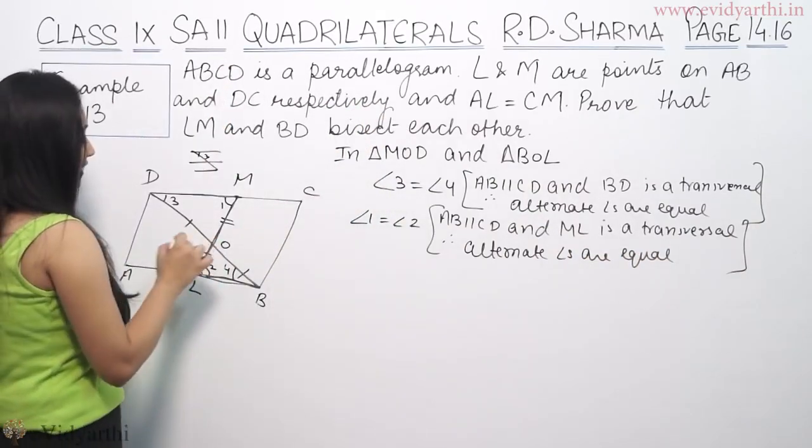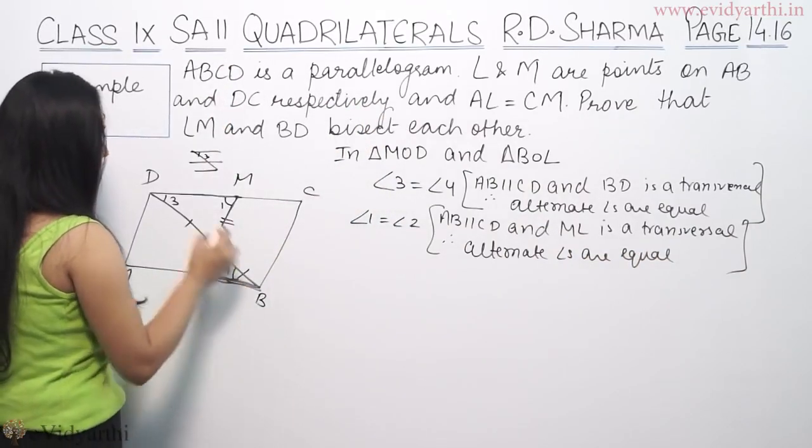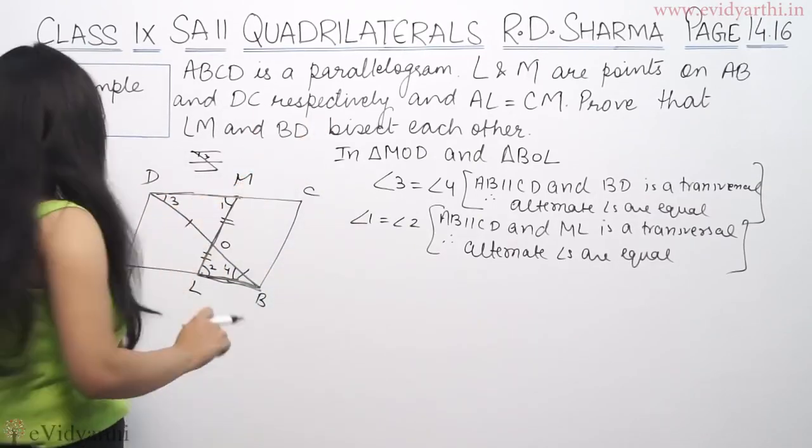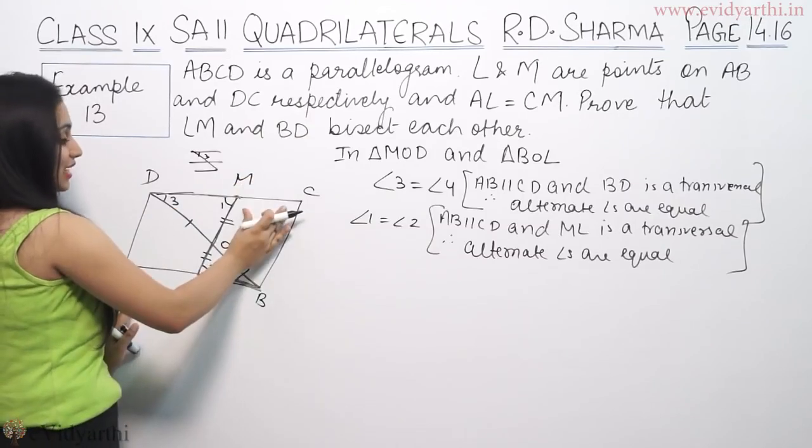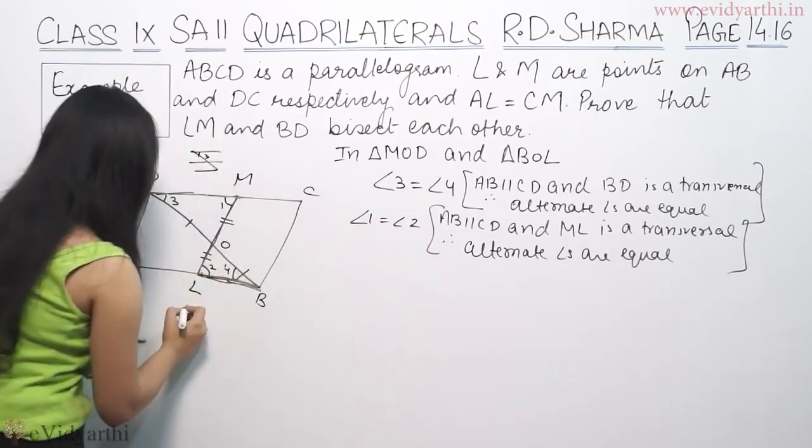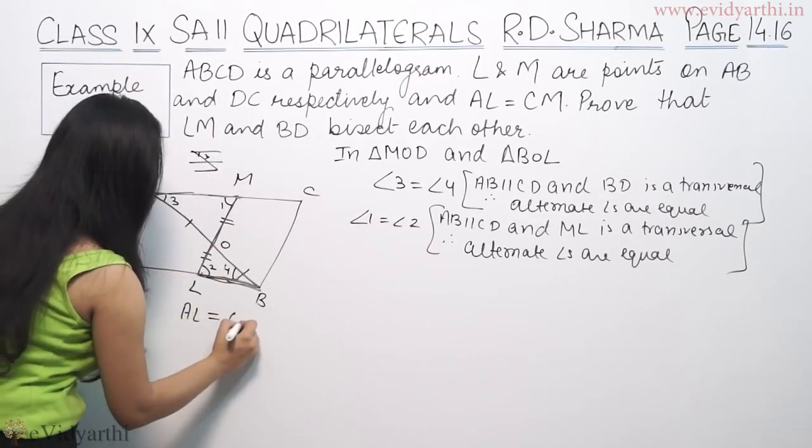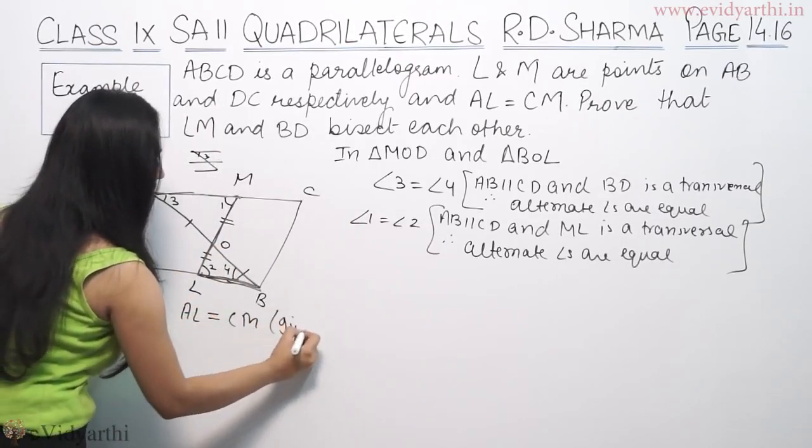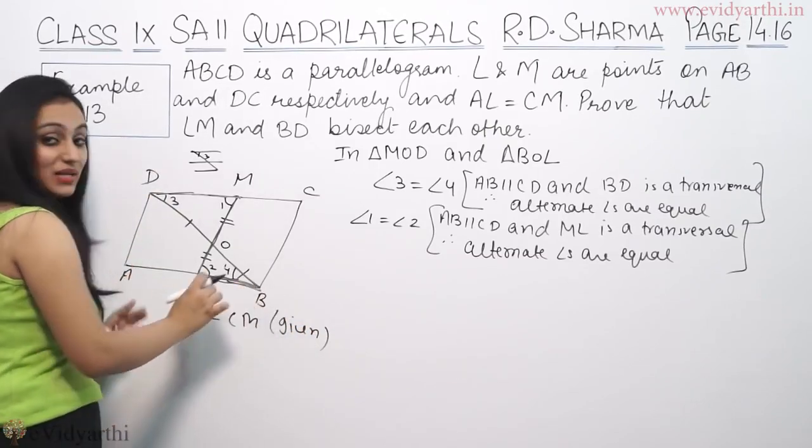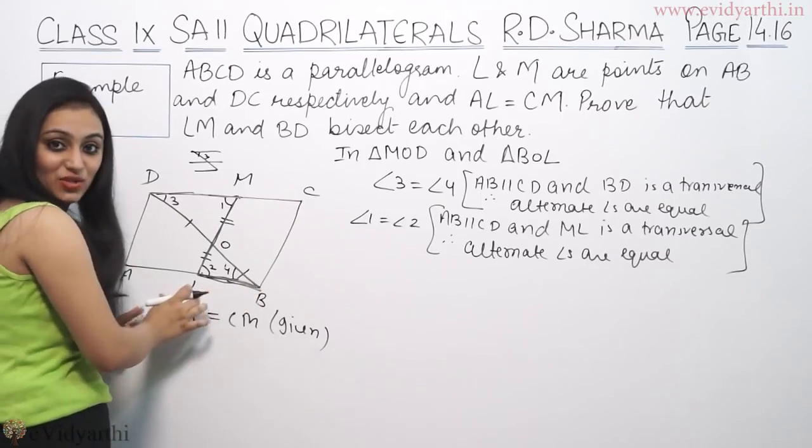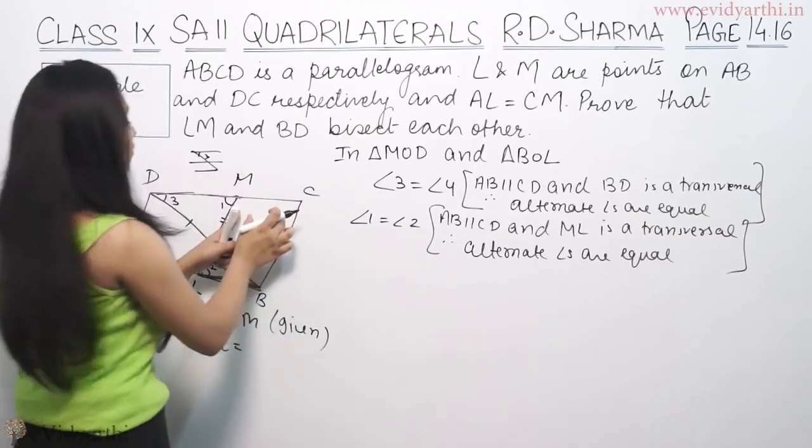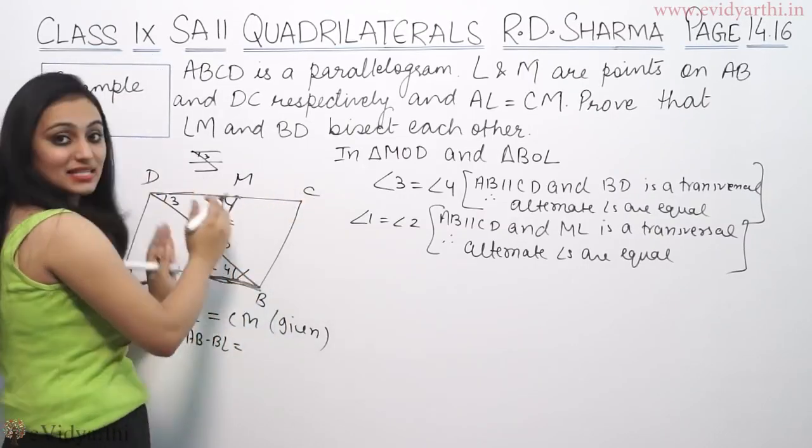Next thing we are talking about is the side given. AL is equal to CM. Now if we have AL is equal to CM, we can write AL as AB minus BL.